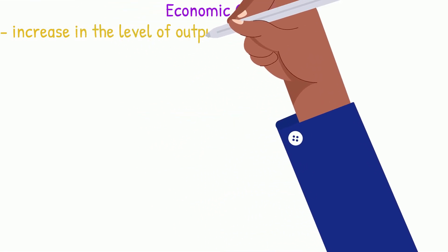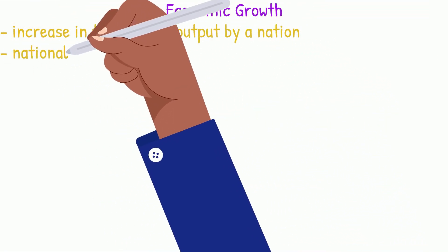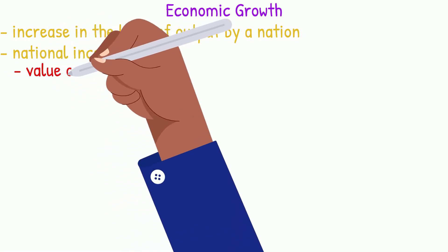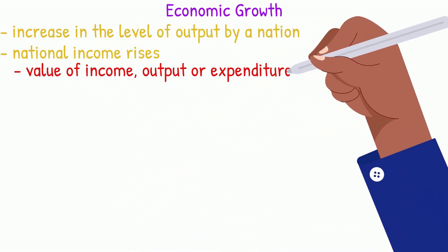Economic growth can be defined as the increase in the level of output by a nation. National income will rise when the economy grows. National income is the value of income, output or expenditure over a period of time.